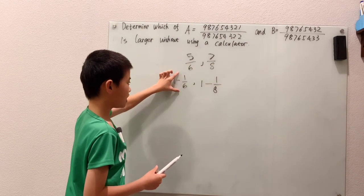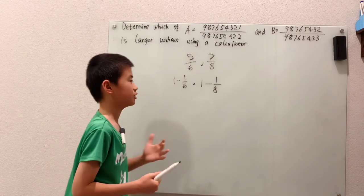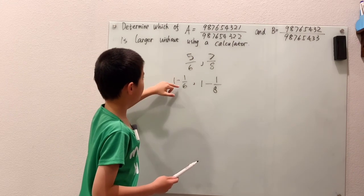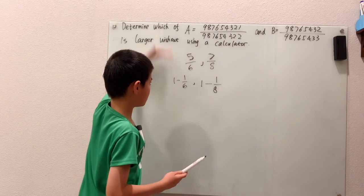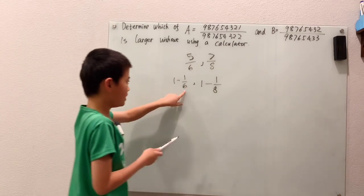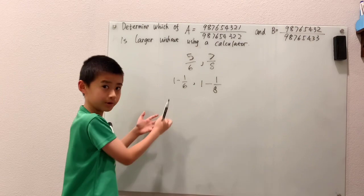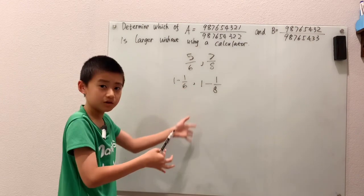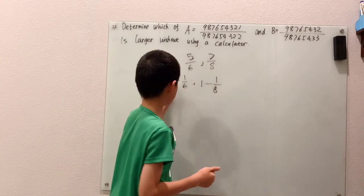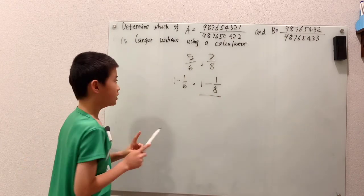This means 1/6 is larger than 1/8, because the rule for common numerators is that the fraction with the smaller denominator is larger. So if this is larger than 1/8, that means you're taking some number and subtracting a large amount compared to that same number minus a smaller amount.